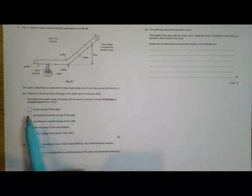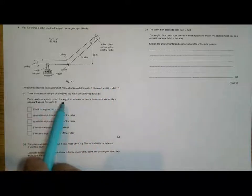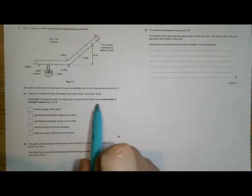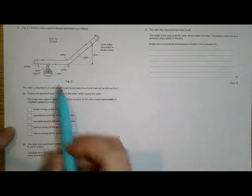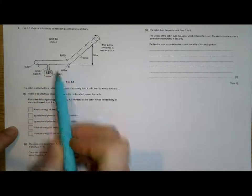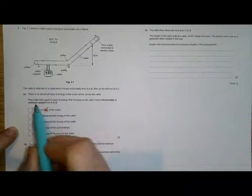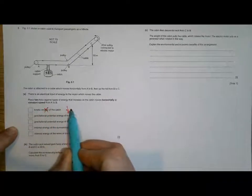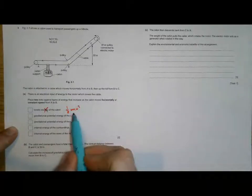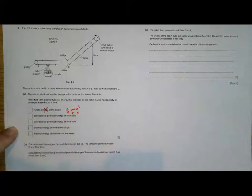It says, place two ticks against the types of energy that increase as the cabin moves horizontally at constant speed from A to B. Kinetic energy cannot increase if it's moving at a constant speed because kinetic energy is half mv squared. The mass isn't changing and the speed isn't changing.